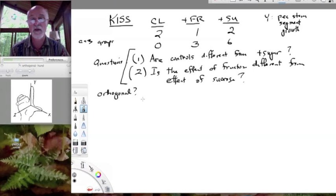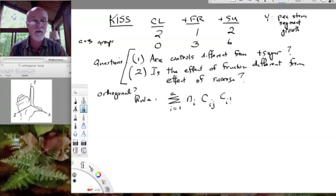And so we need a rule, and the rule for orthogonality, or the test I should call it, I suppose, for orthogonality, is that the summation over all the groups from one to A—we have three groups here—of, well, it depends on the comparison. We have control versus sugar, and we have fructose versus sugar. So we just have two groups in this case that we're comparing in each contrast. And the summation of N sub i, C_ij, C_ik, has to equal zero for orthogonality to hold.